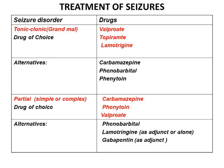For the treatment of tonic-clonic seizures, also known as grand mal seizures, the drug of choice is valproic acid. Alternates include topiramate or lamotrigine. Carbamazepine is used for partial simple and complex seizures as the best drug; alternates include phenytoin and valproic acid.